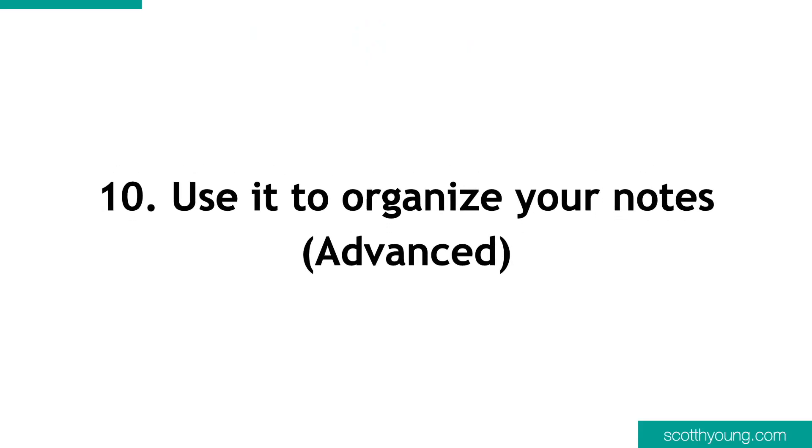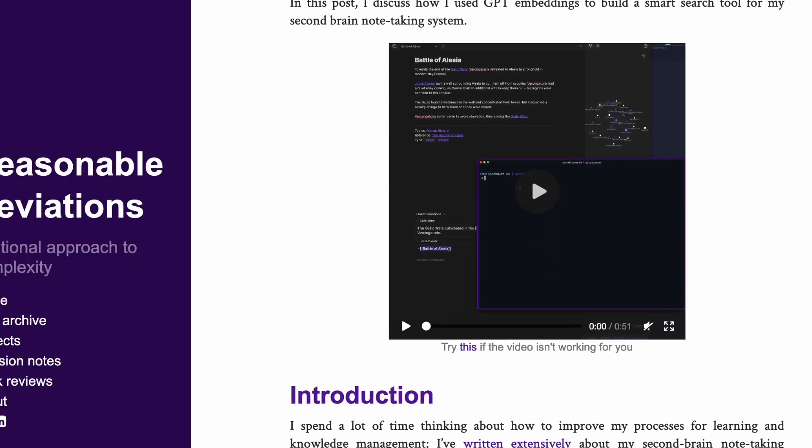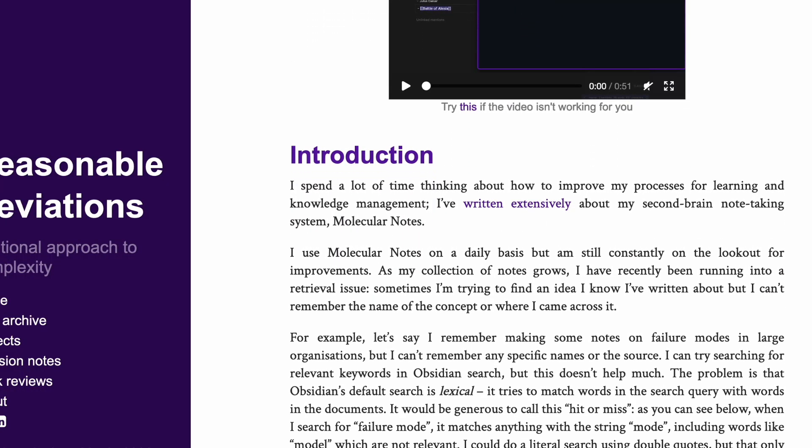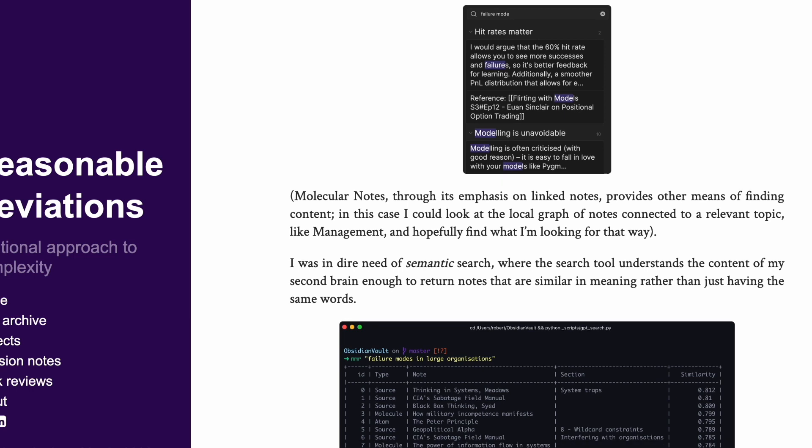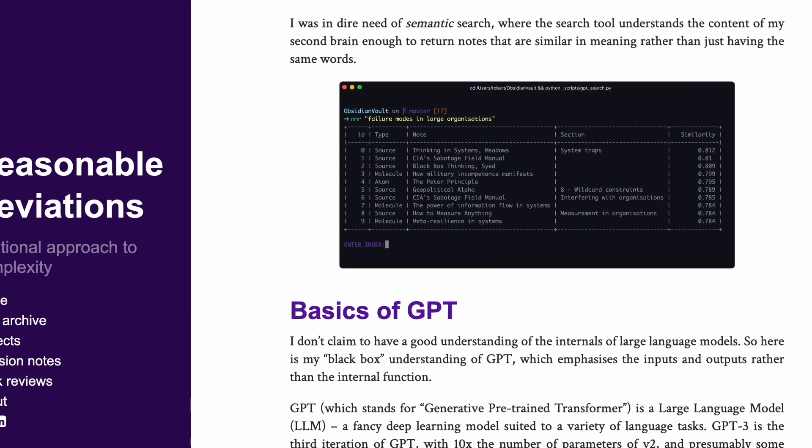Number 10: use it to organize your notes — advanced. As someone who does a lot of research, I often waste time trying to locate my notes. Robert Martin finds the same problem: you search via keywords and have issues because sometimes you can't remember the exact term you used, even if the meaning is roughly the same. Martin solves this by using the embedding feature of large language models — while not strictly ChatGPT, this tool from the same family of natural language processing techniques allows you to find semantically related notes rather than exact keyword matches. Personalized large language models that live on your hard drive and have access to your existing data may be a valuable application.